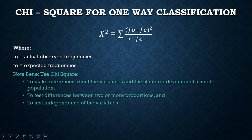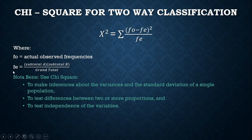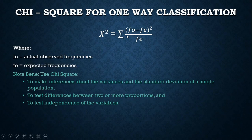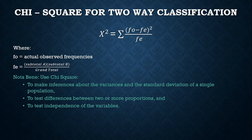Our formula for one-way classification is: chi-square equals the summation of (observed frequency minus expected frequency) squared, divided by expected frequency. For two-way classification, we use the same formula, but there's a difference in how we compute the expected frequency. For one-way, it's already given. For two-way, you compute it using: subtotal A multiplied by subtotal B, divided by grand total.